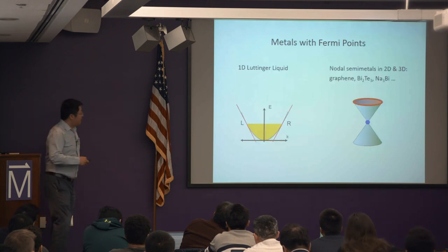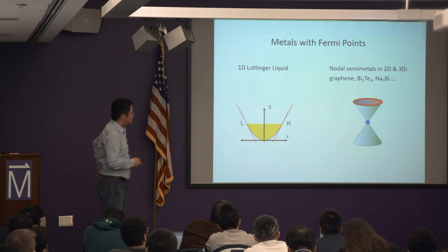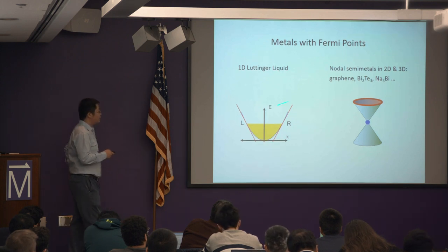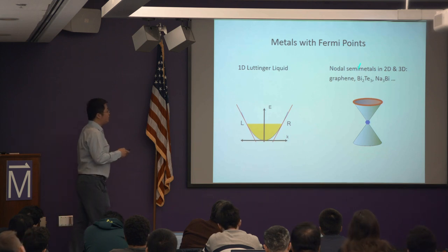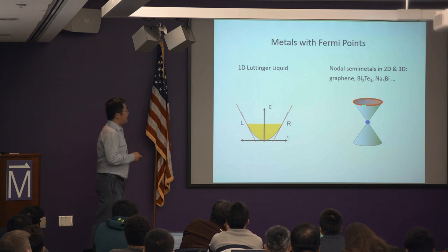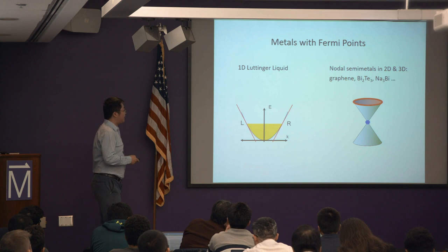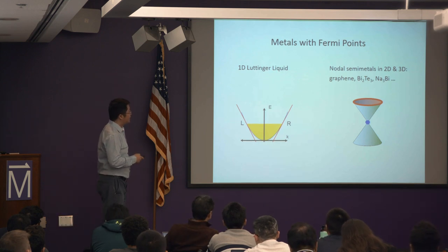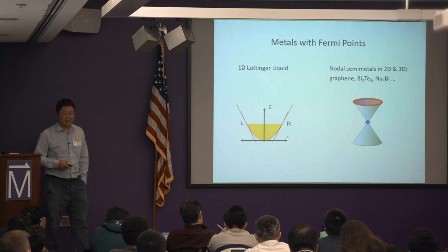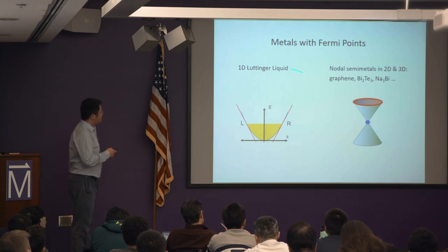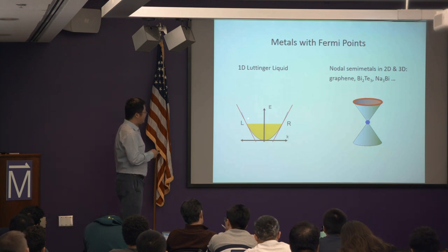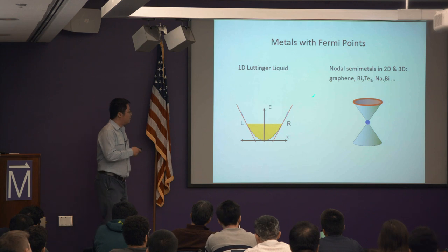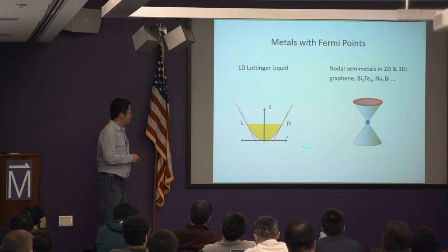From Philip's talk this morning, the Dirac fluids in graphene are an example of a metallic state — instead of a full Fermi surface, it has Fermi points. It's a two-dimensional system like graphene, like the surface state of topological insulators, with a finite number of Fermi points. This also exists in three-dimensional systems such as sodium bismuth — these are Dirac and Weyl semimetals. Another class of systems with Fermi points are one-dimensional metals, where we can linearize the energy spectrum near the Fermi energy to get chiral left-moving and right-moving modes.